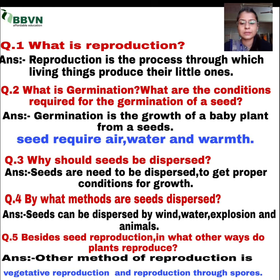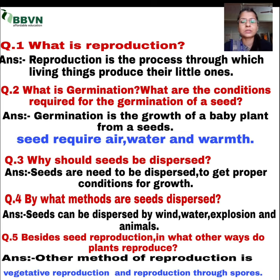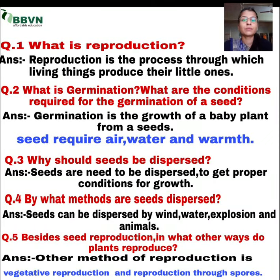Your fourth question is: by what method are seeds dispersed? Jo seeds hoti hain, woh kin kin methods se dispersed hoti hain? Seeds can be dispersed by wind, water, explosion, and animals. Aapne padha tha chapter mein ki kis tarike se jo seeds hoti hain, woh wind — hawa ki help se, water — paani ki help se, explosion — jis tarike se jo beej hoti hain woh phoot kar unka dispersal hota hai, aur animals ki help se jo seeds hoti hain unka dispersal hota hai.